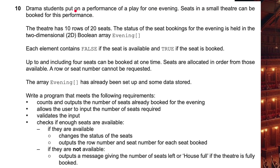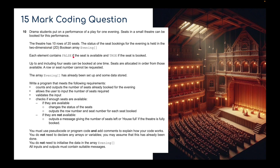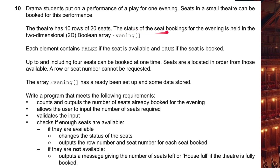I'll read it to you. Drama students put on a performance of a play for one evening. Seats in a small theatre can be booked for this performance. The theatre has 10 rows and 20 seats in each row. The status of the seat booking for the evening is held in a two-dimensional boolean array called 'evening'. Each element contains false if the seat is available, and true if the seat is booked. Up to and including four seats can be booked at any one time. Seats are allocated in order from those available. A row or seat number cannot be requested.